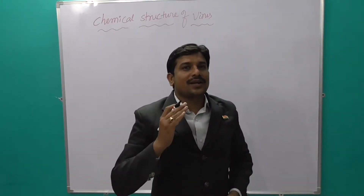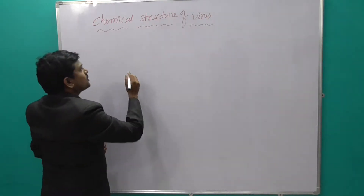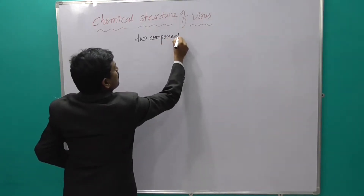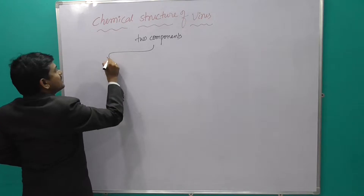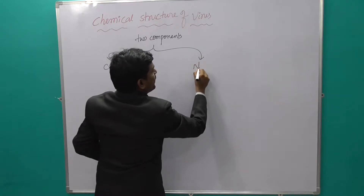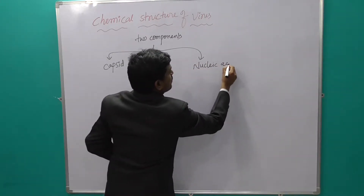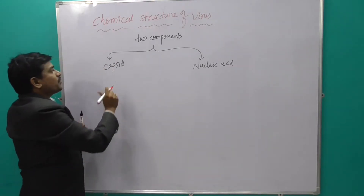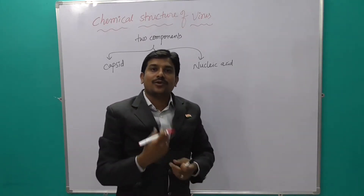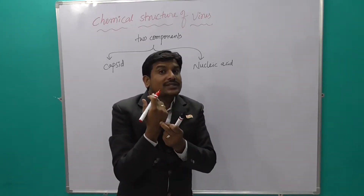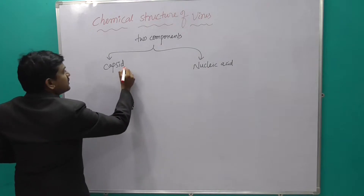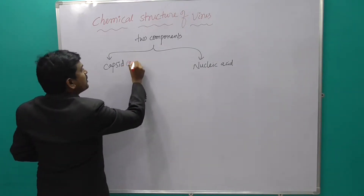Let us discuss the chemical structure of a virus. It has two components. One is the capsule, and another one is the nucleic acid. The virus is covered by a capsule, just like our body is covered by skin. This capsule is also called by another name — that is, protein coat.